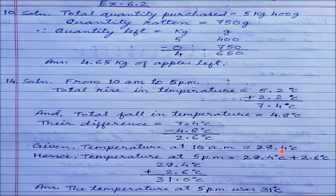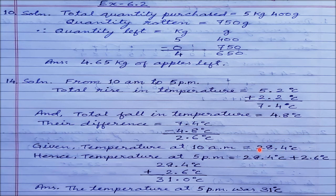Temperature at 10 a.m. was 28.4 degrees centigrade and the net difference is 2.6 degrees centigrade. So temperature at 5 p.m. will be 28.4 plus 2.6 degrees centigrade. The total increase was more than the decrease by 2.6 degrees, so this 2.6 is added to the starting temperature of 28.4. Adding them we get exactly 31 degrees centigrade.